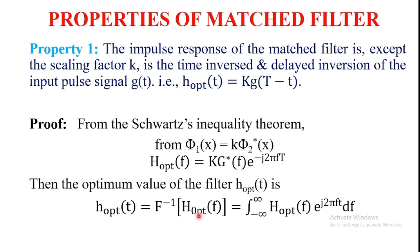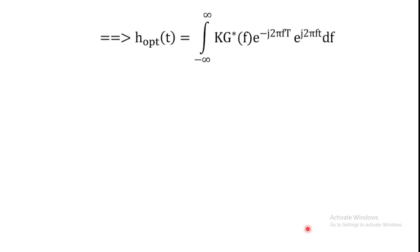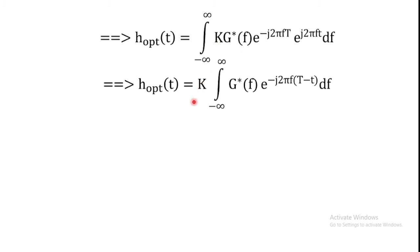H_optimum(f) = k · G*(f) · e^(-j2πfT). Substituting this value, we get h_optimum(t) = integral from minus infinity to infinity of k · G*(f) · e^(-j2πfT) · e^(j2πft) df. Since k is constant it is written before the integration, giving the integral from minus infinity to infinity of G*(f) · e^(-j2π f(T - t)) df.